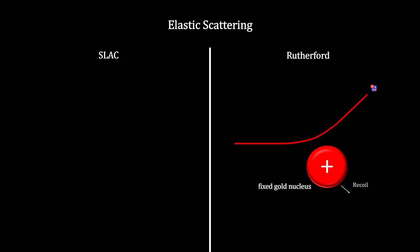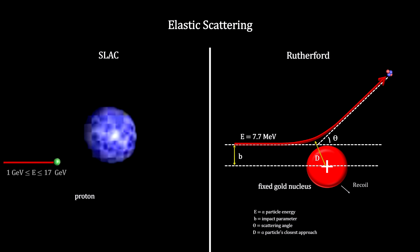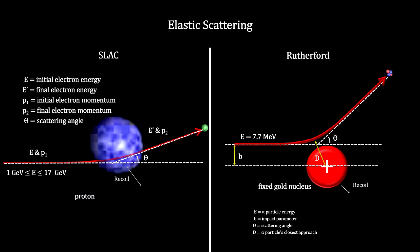Rutherford was examining alpha particle scattering angles off a gold atom target to determine the size of the nucleus. He had to use an alpha particle probe with fixed energy at 7.7 million electron volts. The Coulomb force was repulsive, and his target nucleus was fixed in the solid gold foil, so the target recoil velocity was tiny. The SLAC experiment could vary the incoming electron energy up to 17 giga electron volts. The Coulomb force was attractive, with significant target recoil when a high velocity electron collided with a target proton. The SLAC experiment was designed to find out if the proton's positive charge was distributed evenly throughout its volume.